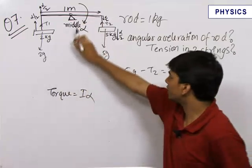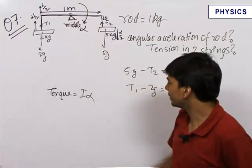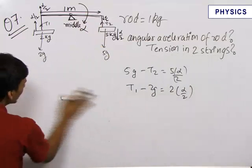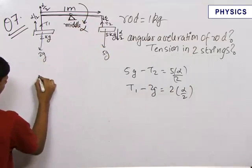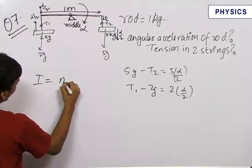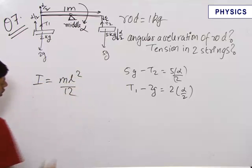So in this case there is no problem. We apply the equation of torque about this point to get, first let us find out the moment of inertia of this rod. The moment of inertia of this rod about this center point will be mL square by 12.